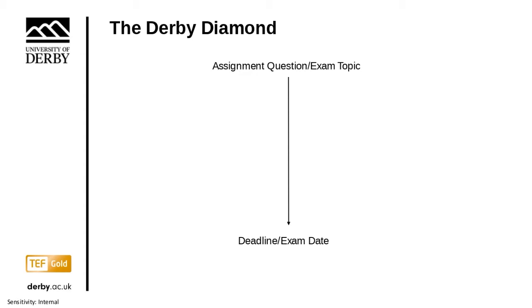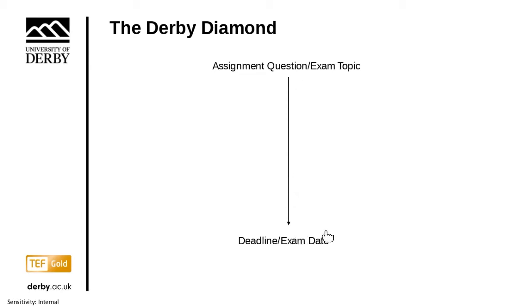I'm going to use my pointer here. You start off with your assignment question or your exam topic, which you get given hopefully fairly near the beginning of your module. You know your deadline or your exam date at the end, and you think: I need to go in a straight line from now through to my deadline or exam date. This line represents time — you think you'll walk in a straight line through time towards it.